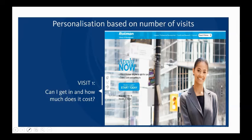What they realized from their analytics was that most people when they came online were looking for 'how much does it cost.' Rather than making them click through a whole series of pages to find that information, they personalized the content to give them cost information immediately. You get that immediate engagement, because attention is now a commodity you have to earn — you don't have a chance to get their attention five minutes in. It sounds simple, but it really does work.